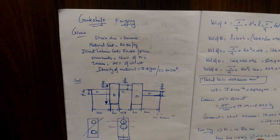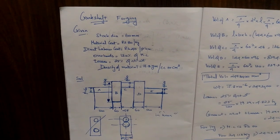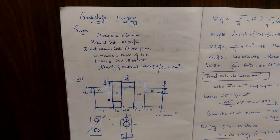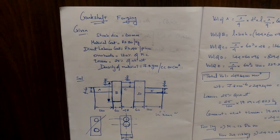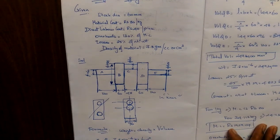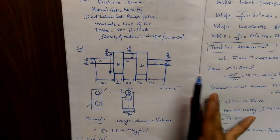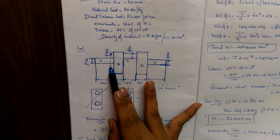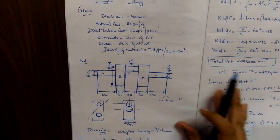Overhead charges are 130% of material cost. Losses are 25% of the net weight. The density of the material is 7.8 grams per cubic centimeter. Now we will talk about the diagram — the stock diameter, and the force diameter is 144.